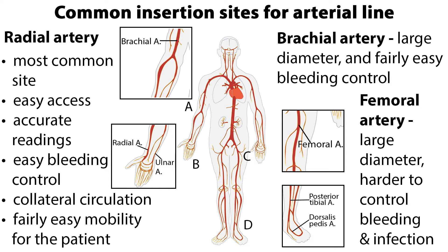The disadvantages of the brachial artery include immobilization of the limb, thrombosis, and limited collateral circulation. The advantages of the femoral artery include large diameter making it easy to insert even when the patient has low volumes. The disadvantages include difficulty visualizing, hard to control bleeding, immobilization of the limb, and prone to infection due to the location. The dorsalis pedis is a riskier site that is not used very often.